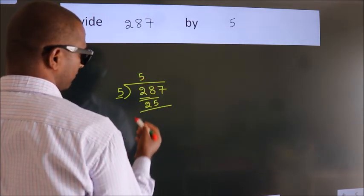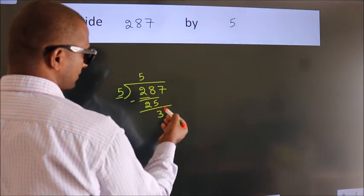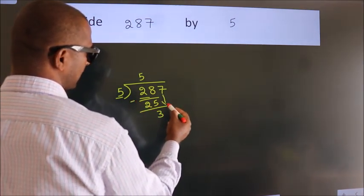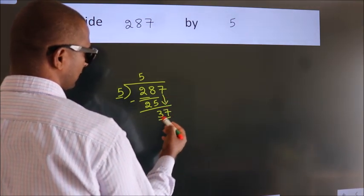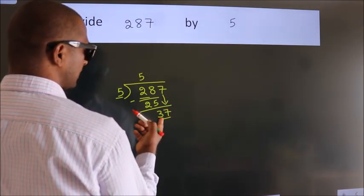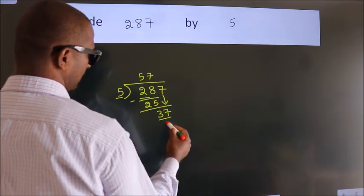Now we should subtract. We get 3. After this, bring down the beside number, so 7 down. So 37. A number close to 37 in the 5 table is 5 times 7 equals 35.